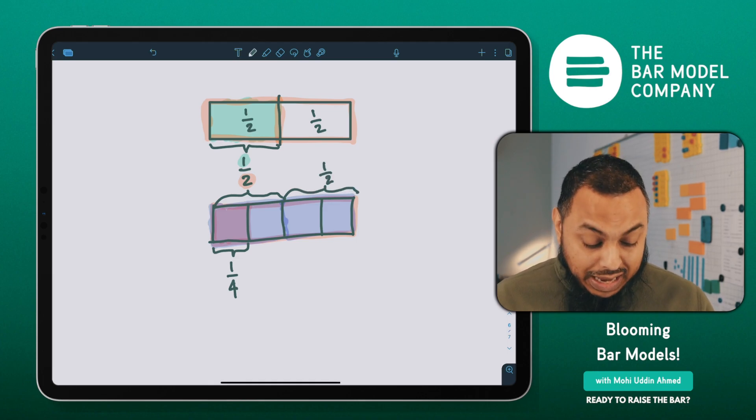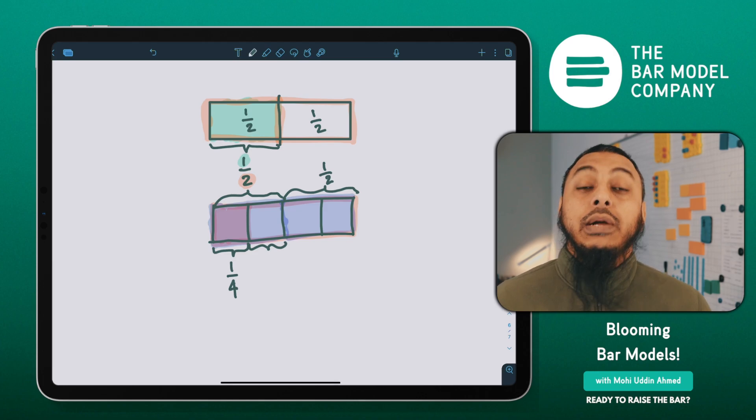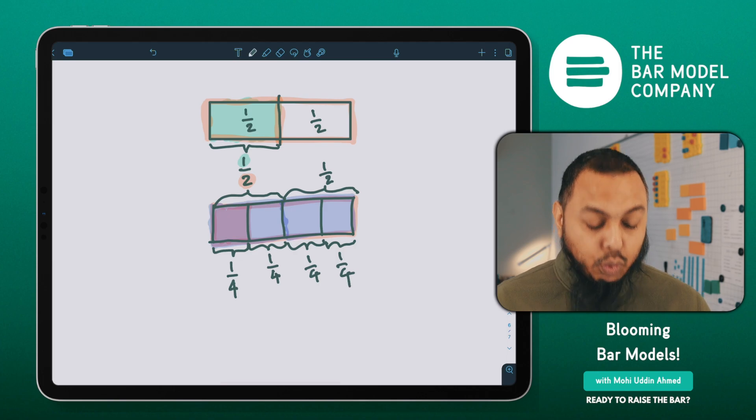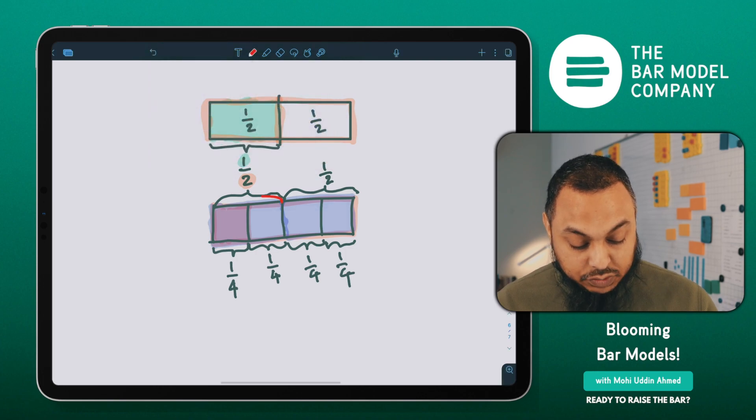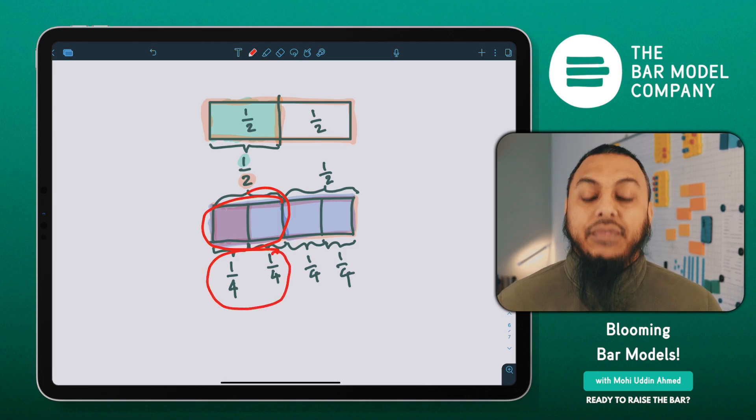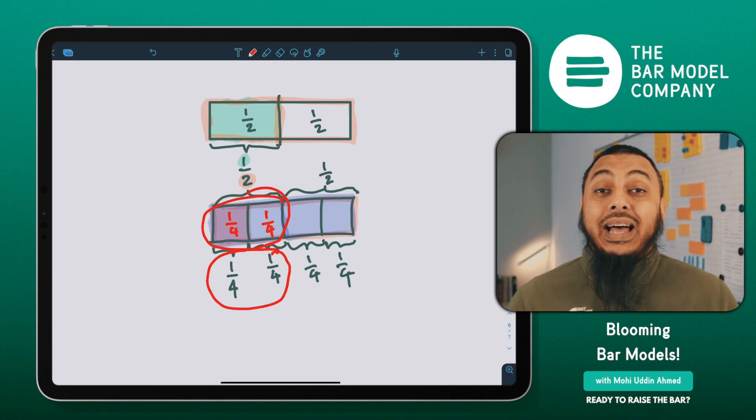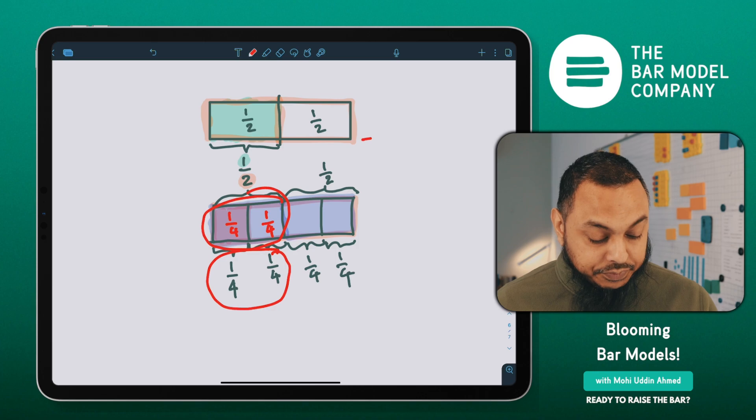And so how many halves are there to make the whole? There are two halves that make the whole. But how many quarters are there that make the whole? There are four quarters that make the whole. And this is important part class. A half is represented here. But a half is also how many lots of quarters do I have there? That's one quarter, that's another quarter. I can see that a half is equivalent to two lots of quarters.